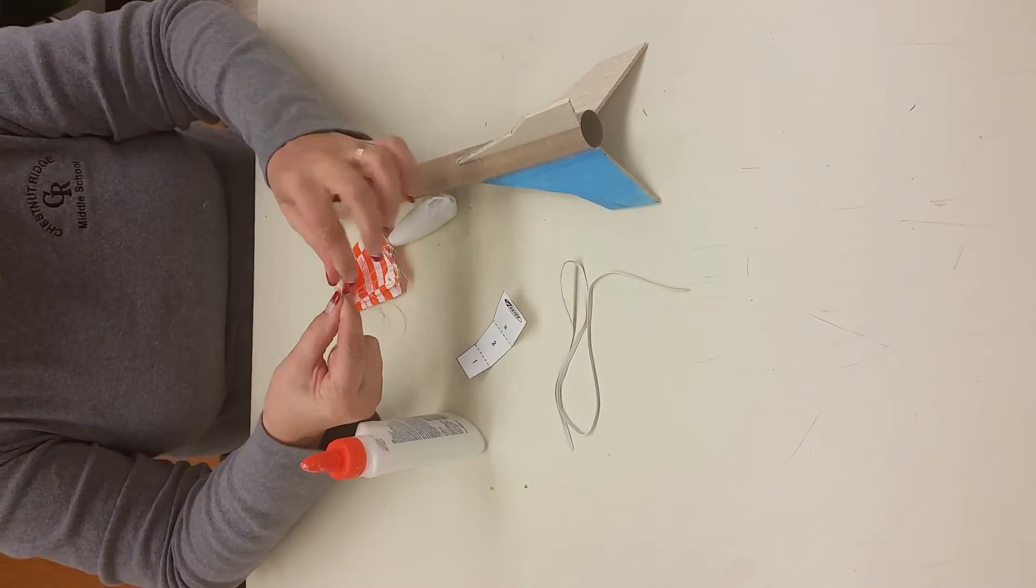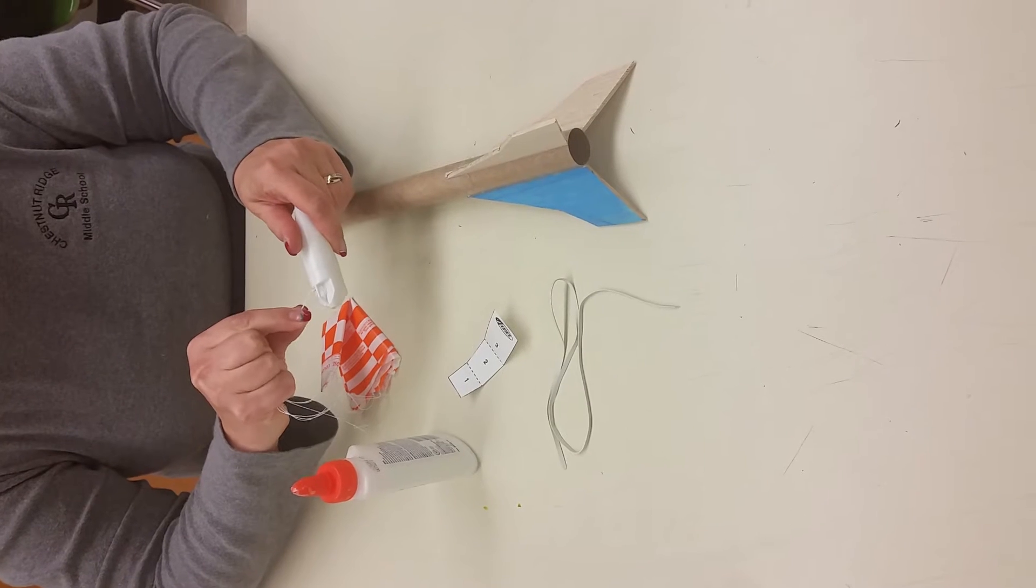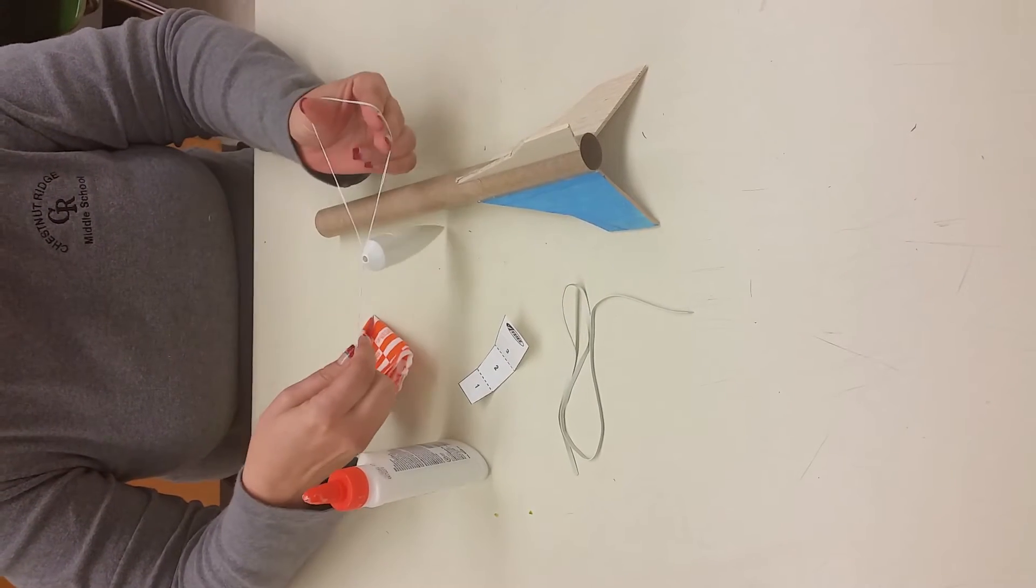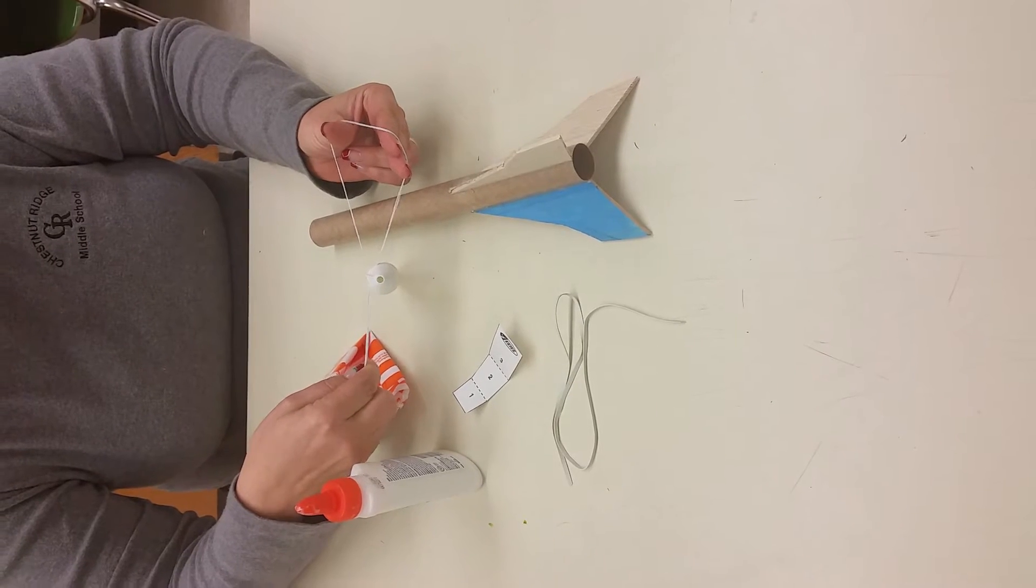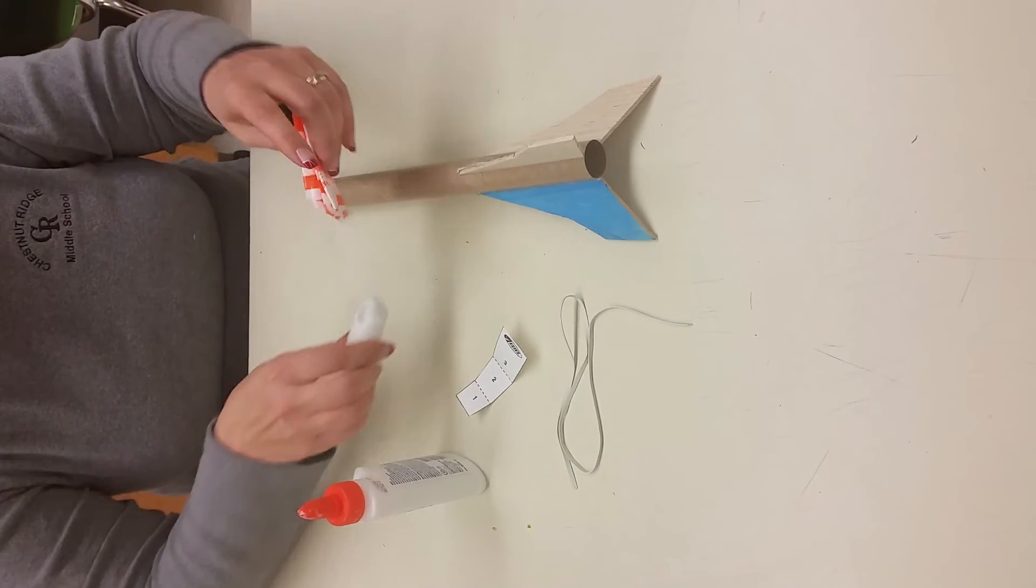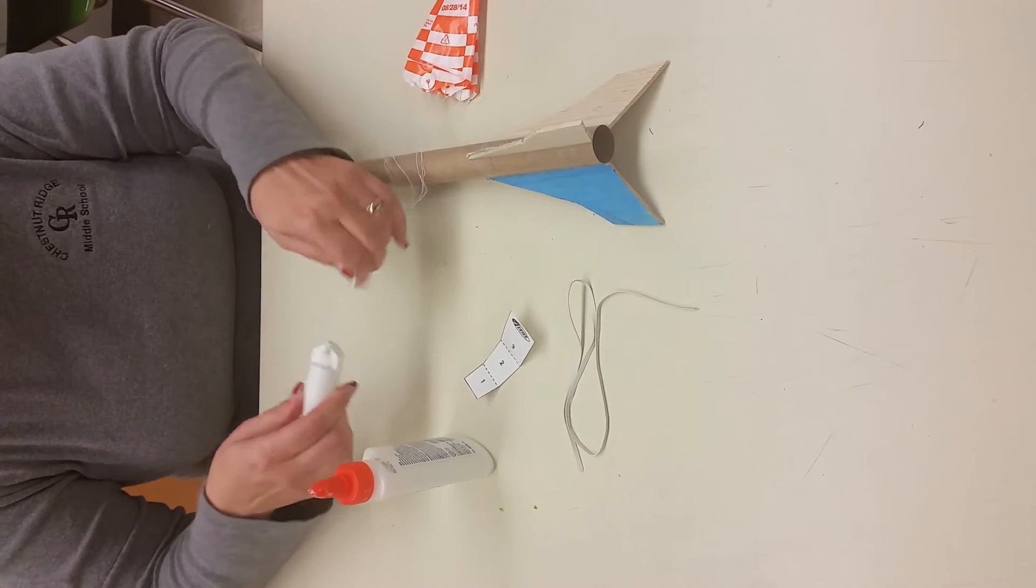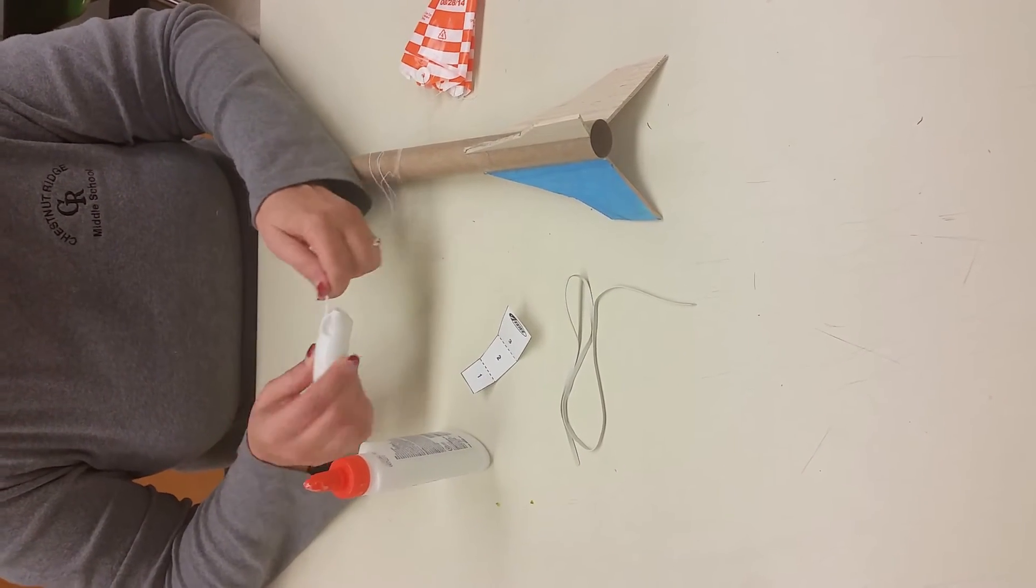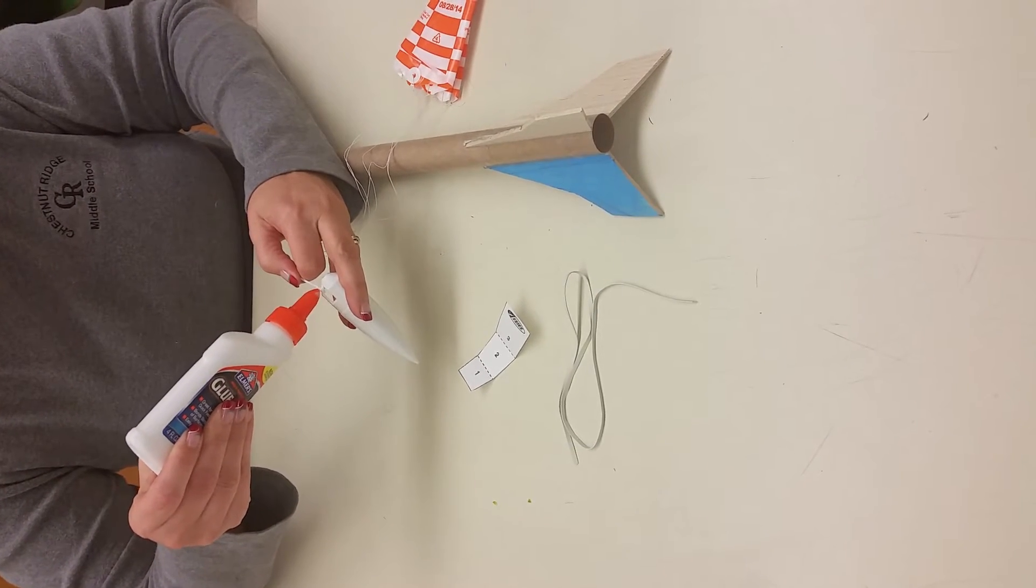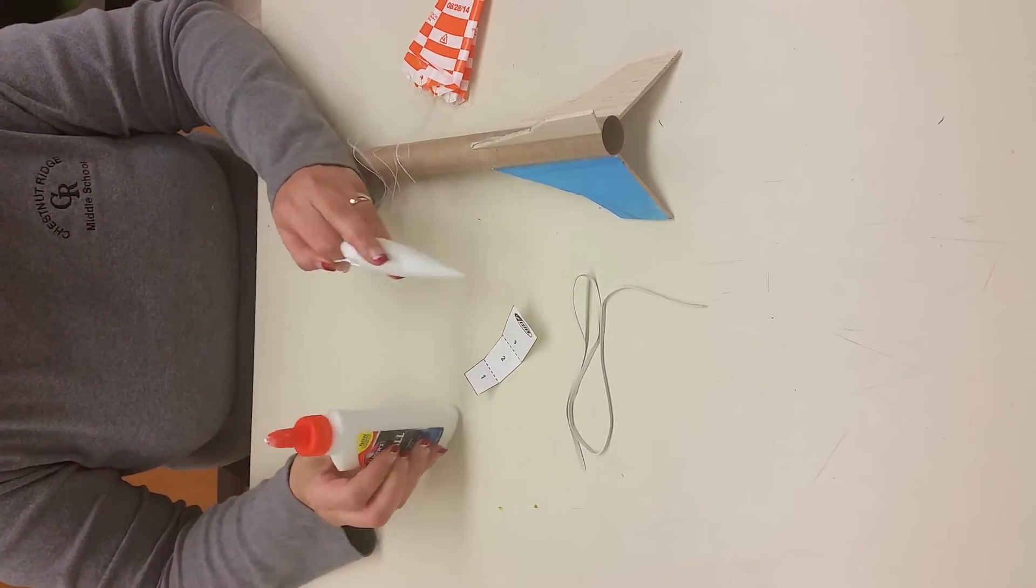Once you have all three, you're going to stick that through this little part of your nose cone here and open it back up. Then you're going to take the entire parachute and put it through that loop and pull. This will make a slip knot, and that may loosen up a little bit, so I would suggest putting just one small drop of glue on it so that it'll stay.